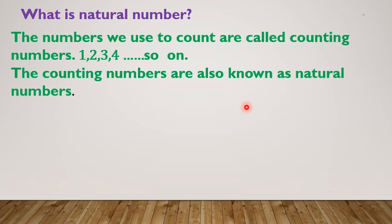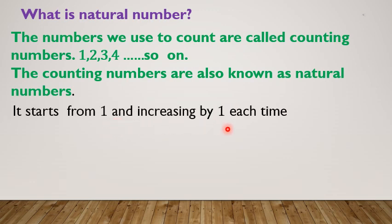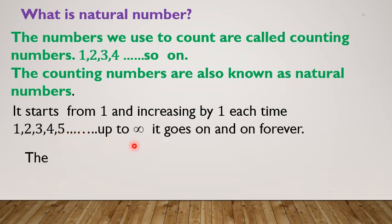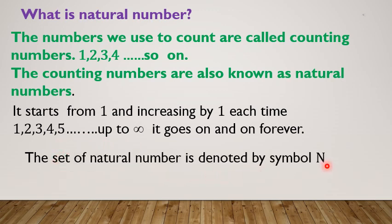It starts from 1 and increases by 1 each time: 1, 2, 3, 4, 5, up to infinity. It goes on and on forever. The set of natural numbers is denoted by the symbol capital letter N. N = {1, 2, 3, 4, ..., ∞}.